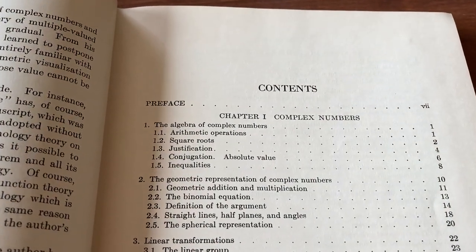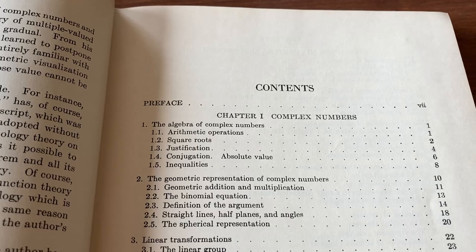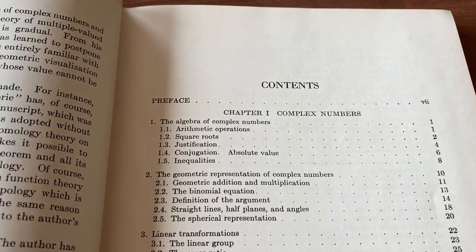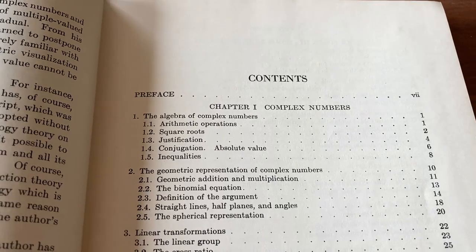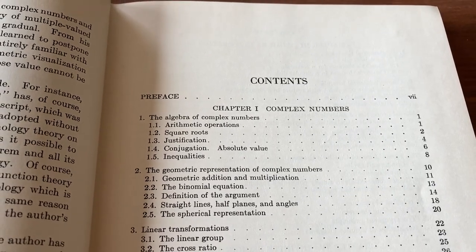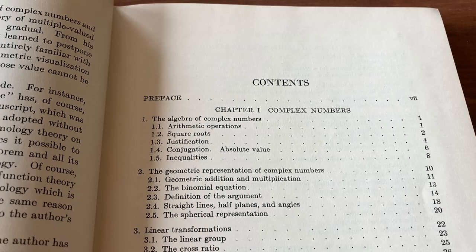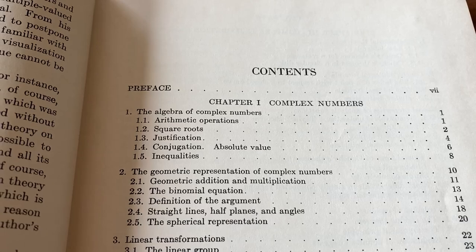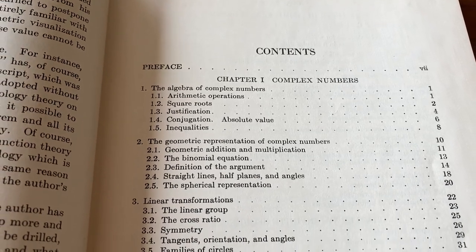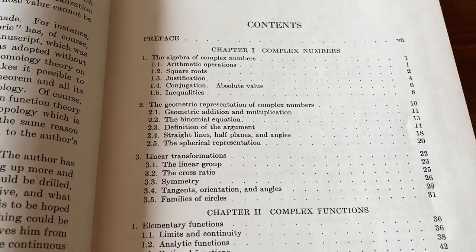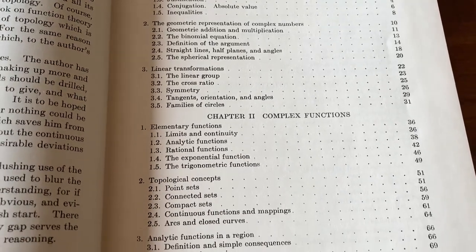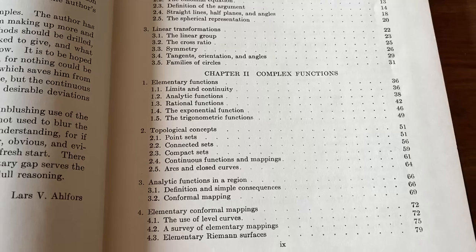So this is the table of contents. Even though Ahlfors says that this is mainly written for graduate students, as an undergrad, you can actually read and learn from this book. Now, this is a very rigorous book. So keep that in mind before jumping into it. It starts with complex numbers. Lots of stuff there. Quite a bit of information. And then it goes on to complex functions. Really, really nice.